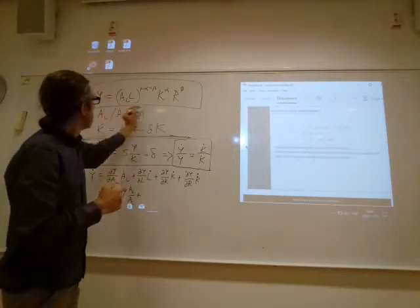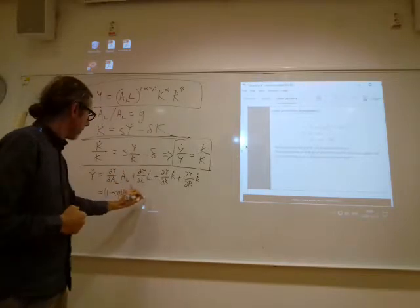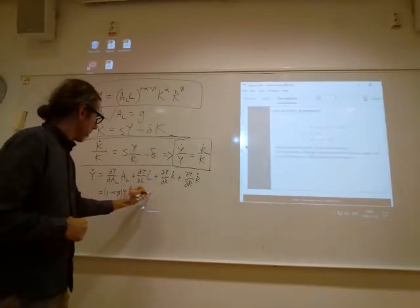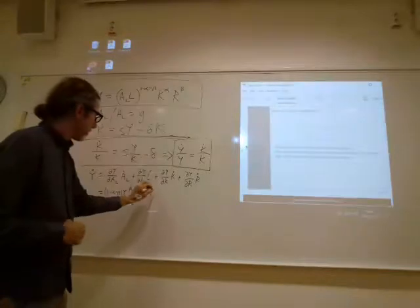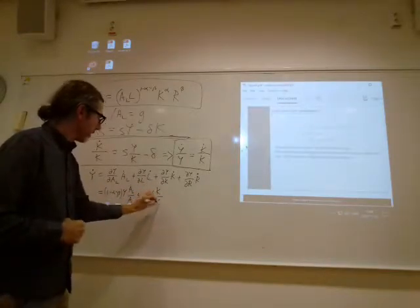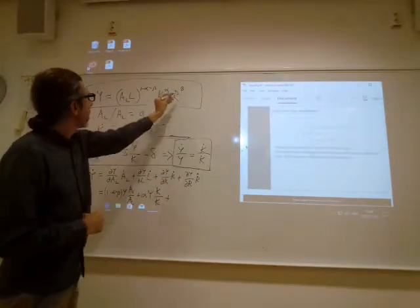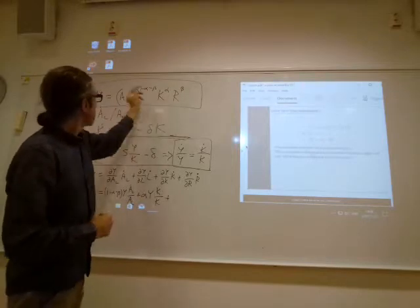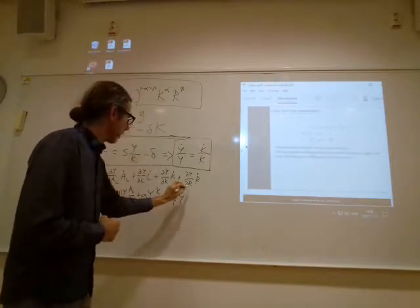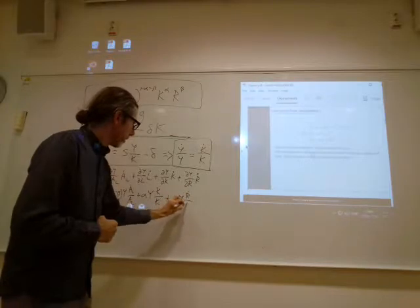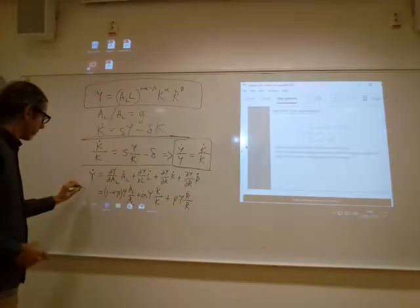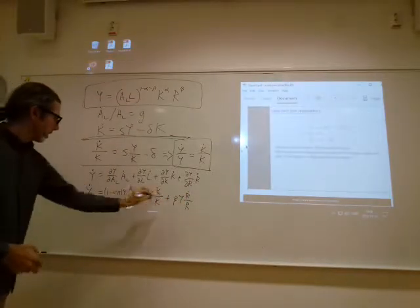DY DT K is alpha times Y over K. Alpha Y over K, so it's alpha Y times K dot over K. DY DT R is beta times Y over R. Beta Y, R dot over R. So, Y dot is this.